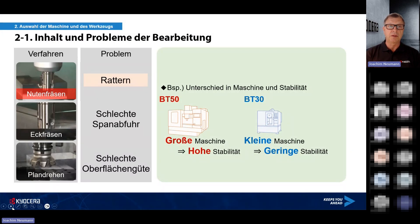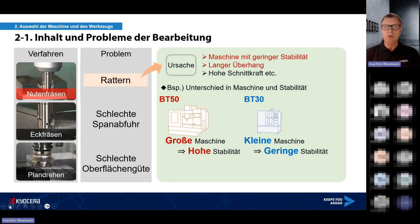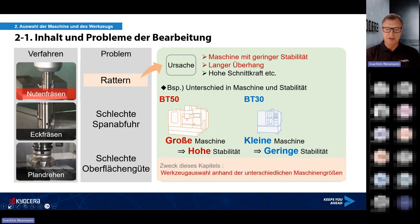Schauen wir uns die Probleme bei der Bearbeitung an: Beim Nutenfräsen, Eckfräsen, beim Planfräsen gibt es unterschiedlichste Probleme. Besonders anspruchsvoll ist das Nutenfräsen, weil das Werkzeug in voller Umschlingung ist – das Werkzeug neigt zum Rattern und zu Vibrationen. Ursachen sind eine Maschine mit geringer Stabilität, langer Überhang, hohe Schnittkräfte. Wir sehen hier die Möglichkeiten der Maschinenauswahl: BT50 oder BT30, also eine große Maschine mit hoher Stabilität oder eine kleine Maschine mit geringer Stabilität. In Verbindung mit der CO2-Neutralität orientieren wir uns an der richtigen Werkzeugauswahl anhand der Maschinengröße.